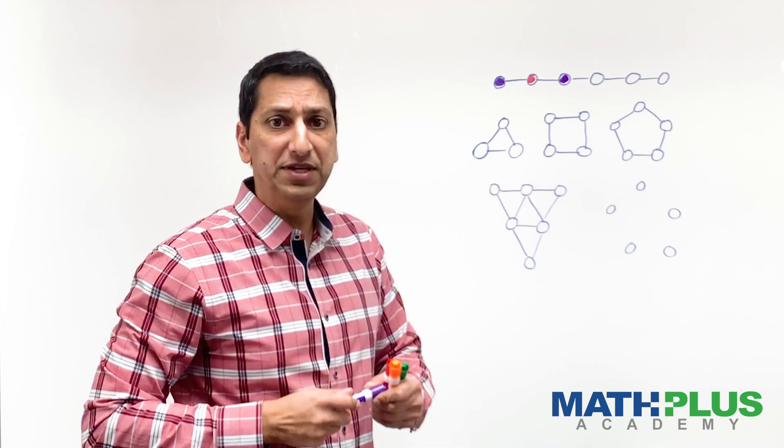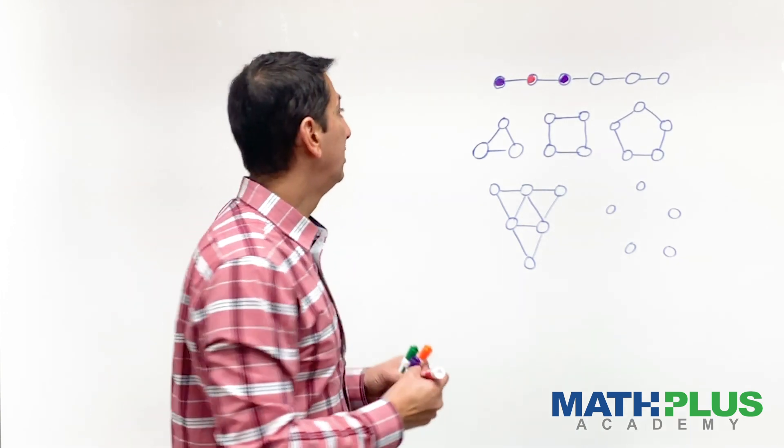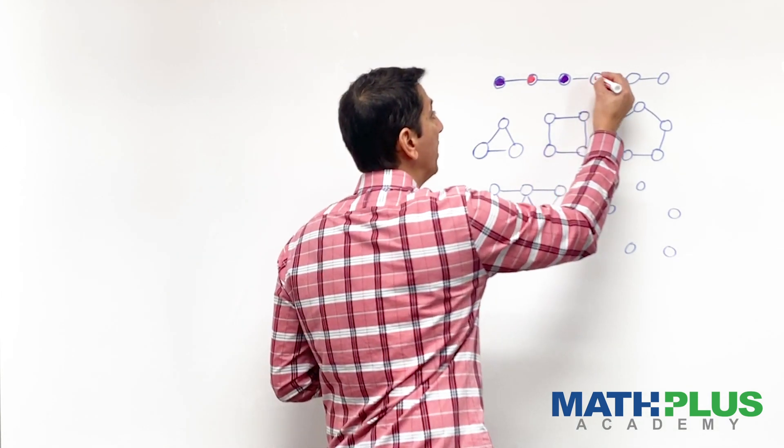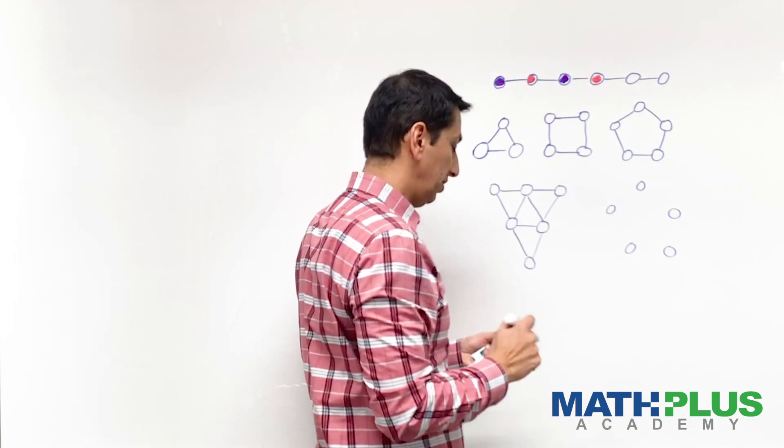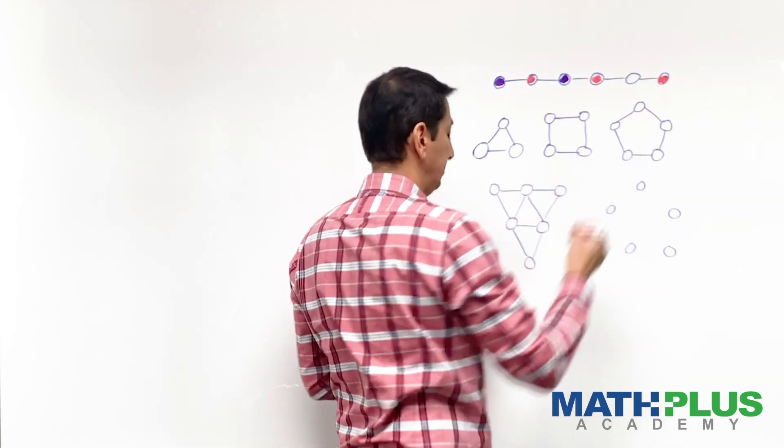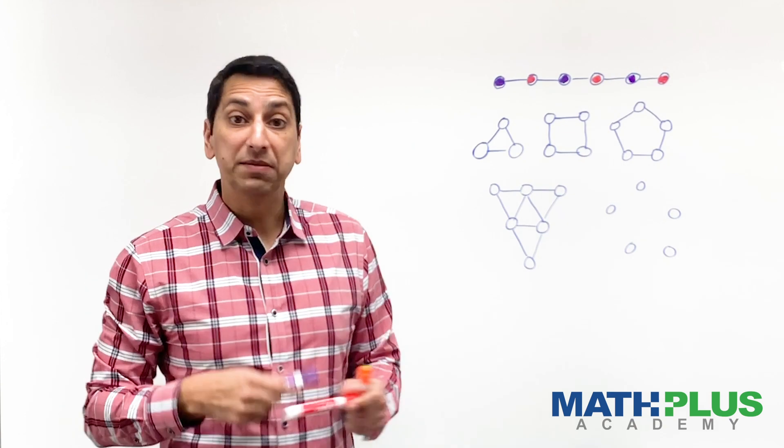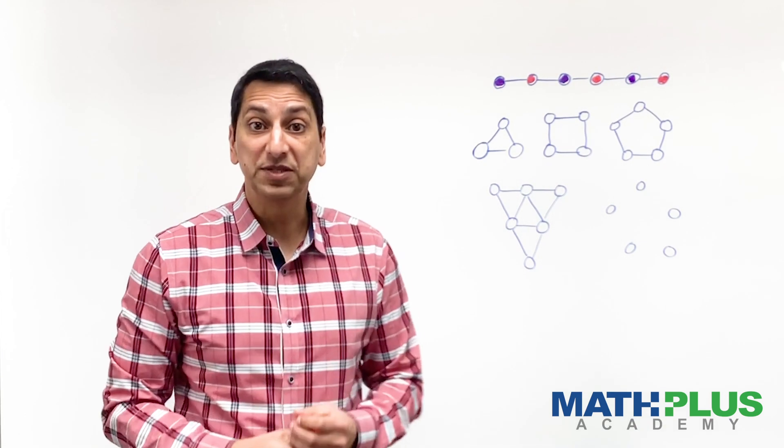And you can probably see what's going to happen here. You might have figured this out already. But I can go back to red, and then purple, and then red again. Just like that. And I'm done. I have solved this puzzle.